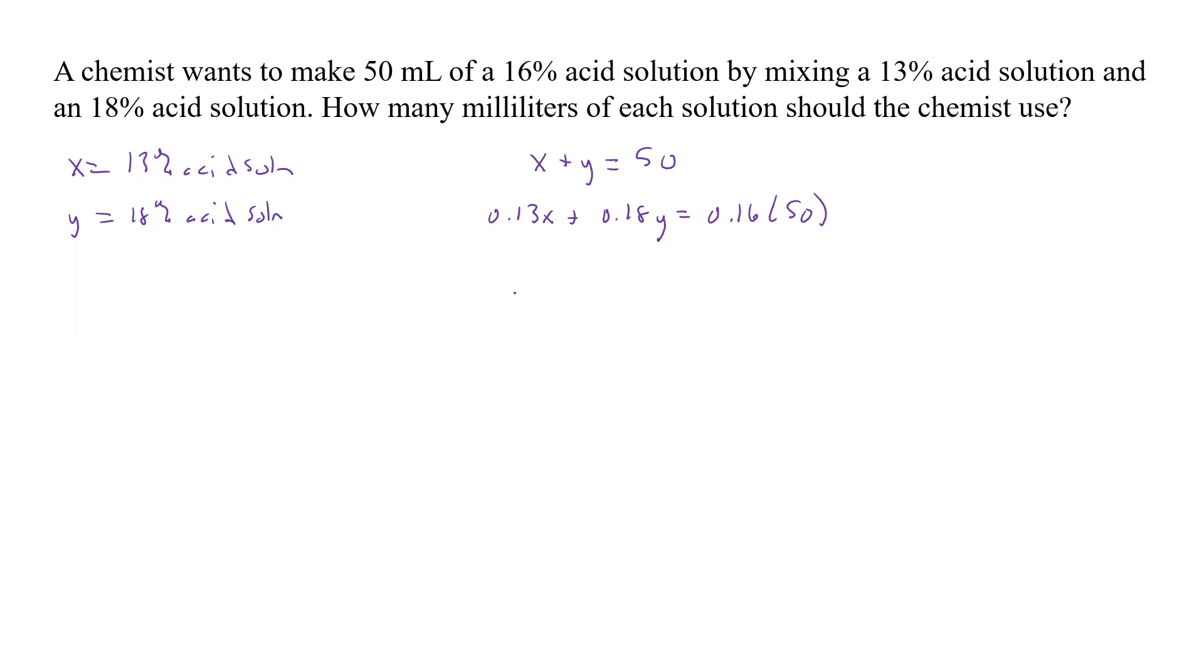Okay, so now we have our two equations and two unknowns. So what do we want to do? Well, maybe we could substitute and say maybe let's let X equal a negative Y plus 50. And all we did here is we subtracted Y from both sides. And so now we can take that and that whole thing we can substitute in here.